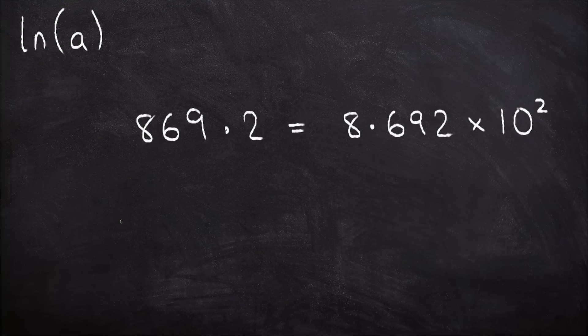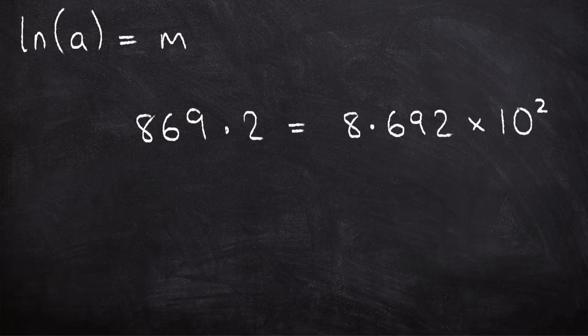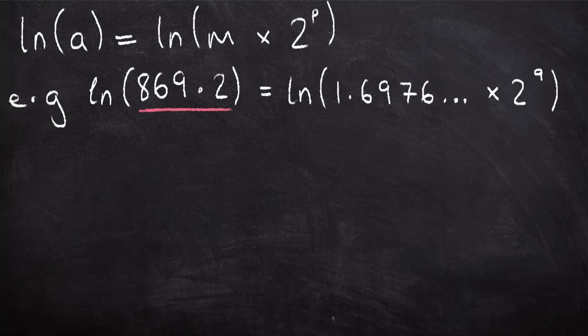But calculators don't actually store numbers like this either, because they don't store numbers in base 10. They store them in base 2, or binary. So you would end up with a mantissa, which is this, multiplied by 2 to some power. So this number, for example, 869.2, would actually be stored as 1.6976 times 2 to the power 9.